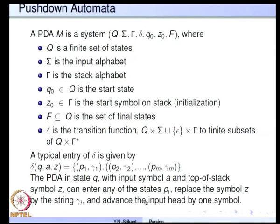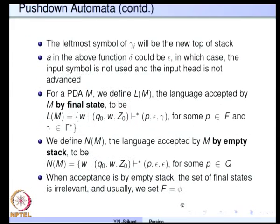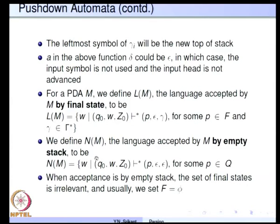A typical example: from a state Q on input symbol A and stack symbol Z on the top of stack, it can move to state P1, P2, or Pm. In that process it removes the top-of-stack symbol and replaces it with gamma-1, gamma-2, etc., depending on which state it moves to. It also advances the input by one, and the left-most symbol of gamma-i will be the new top-of-stack symbol. We also defined acceptance by final state and by empty stack.